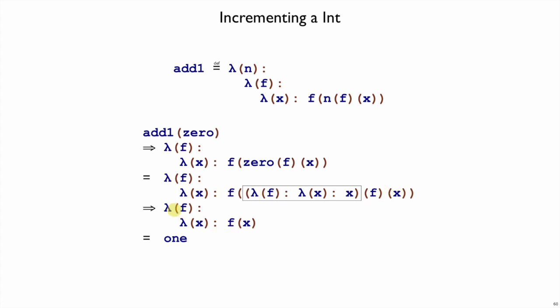And now we can step back and see that we have lambda f lambda x f applied to x. That's exactly the encoding for 1. So we can see that add1 of 0 is completely equivalent to 1, just like you want add1 to behave.